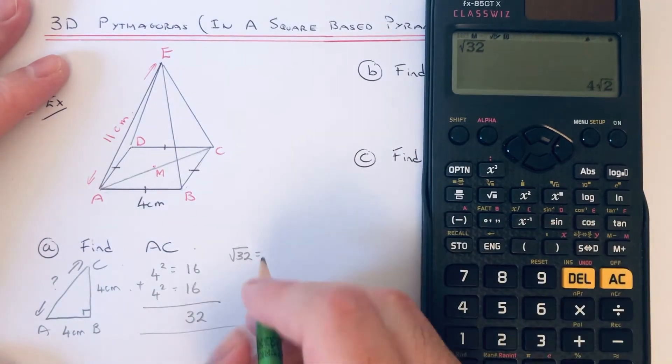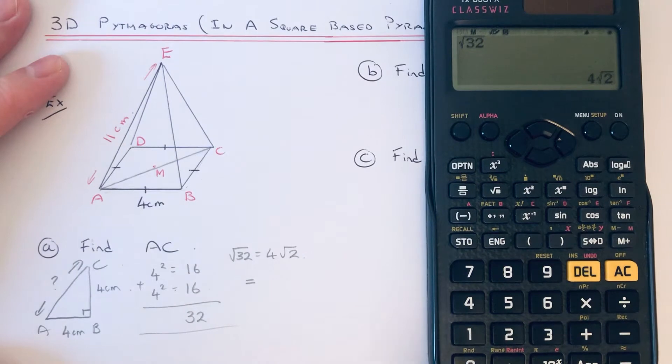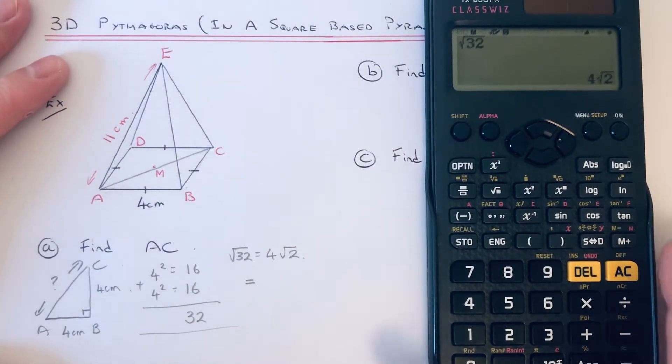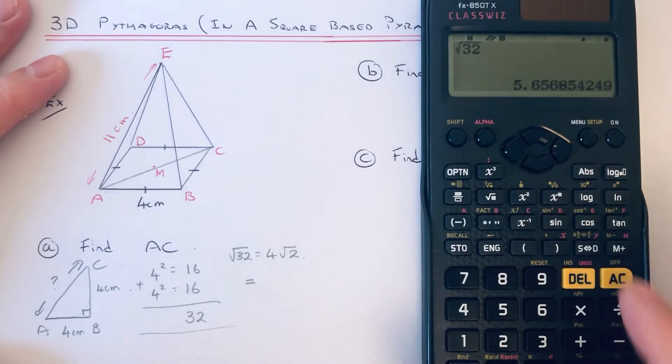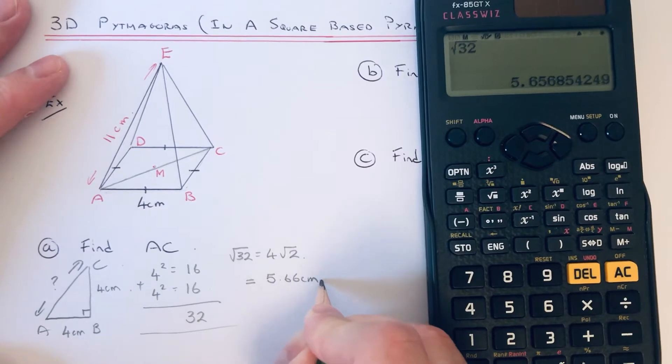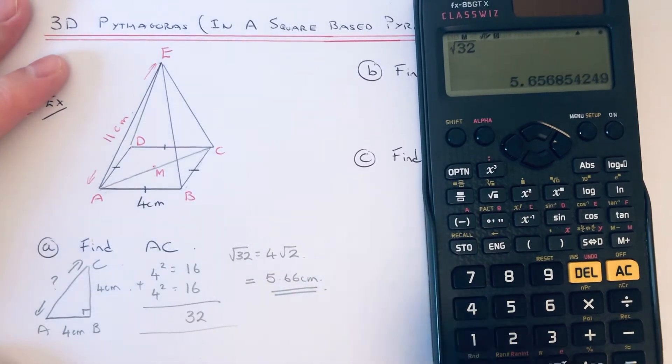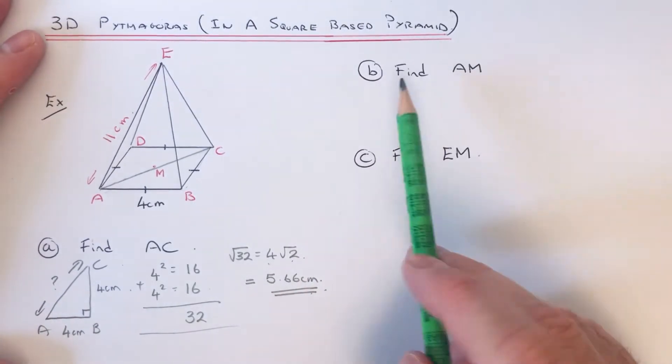Square root of 32 simplifies to 4√2. Let's write that down because it might be useful for part B. And then let's just put it as a decimal as well, so it's 5.66. Okay, so we've got our answer in surd form, 4√2, or as a decimal, 5.66.